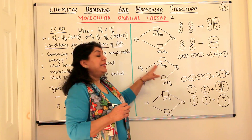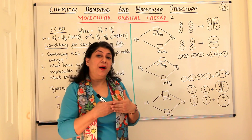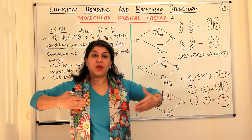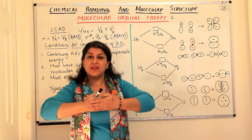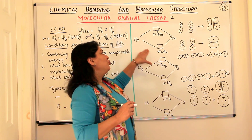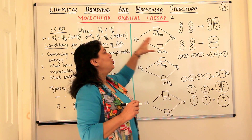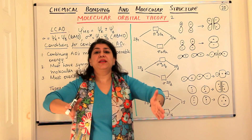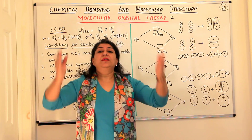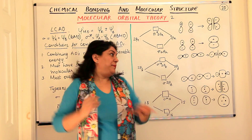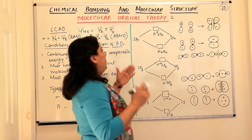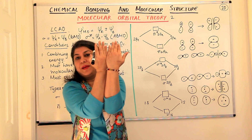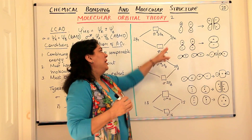But it is a sigma orbital—the overlap is head-on because of its orientation. Now if you come to 2px and 2py, both would be similar because they are perpendicular to the 2pz. So we will take just one example. When they are perpendicular, the overlap is taking place sideways.